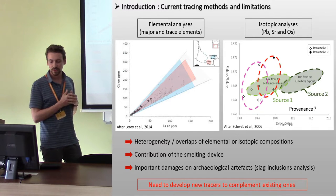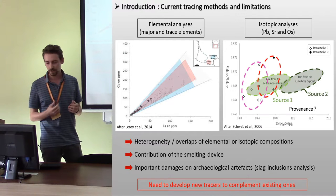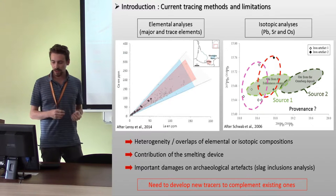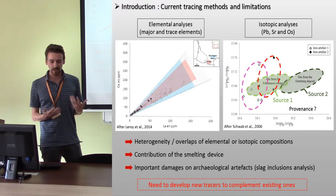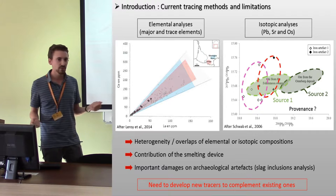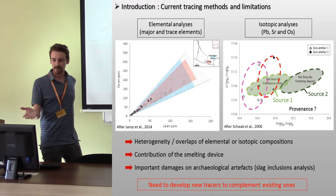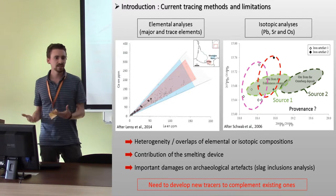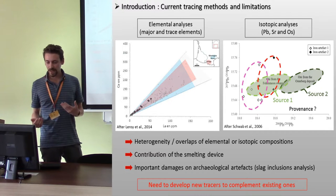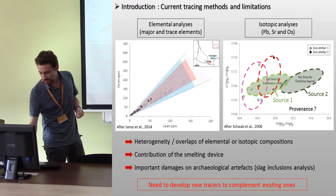Moreover, we can have an important contribution of the smelting device which could change the composition of the tracer. And sometimes the detection of slag inclusions in the metal to perform elemental analysis may induce important damage on the archaeological artifacts, which would be quite problematic for museum pieces. Of course, these are just some examples of limitations, and many studies have used this kind of analysis with success. But this showed the need to develop new tracers to complement the existing ones.